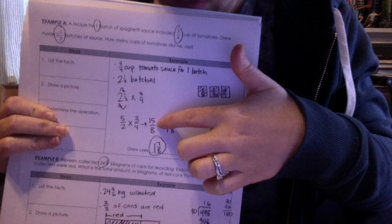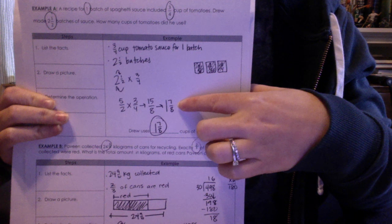Once you've got 15 over 8, turn it back into a mixed number. 8 goes into 15, 1 full time with 7 left over. So 1 and 7 eighths.